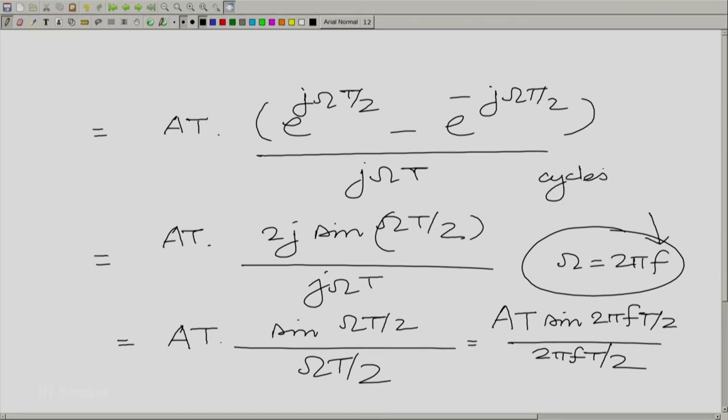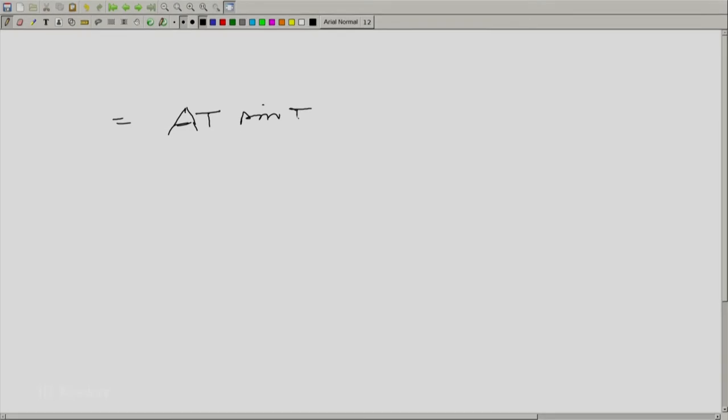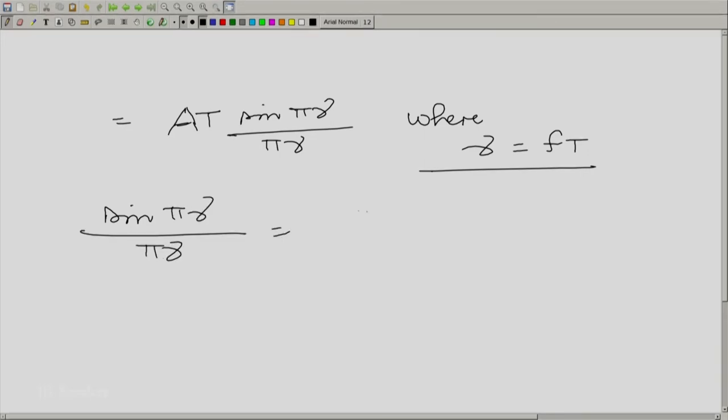And this is a very special function. We can rewrite it as aT sin 2 pi f T by 2 divided by 2 pi f T by 2, where omega is essentially 2 pi f. The expression that we have is aT sin pi gamma divided by pi gamma, where gamma is fT. Now this function sin pi gamma by pi gamma is called the sinc function. The sinc function is an oft repeated and oft used function in the context of signal and systems. It would be a good idea for you to get very familiar with this function and understand it very well.